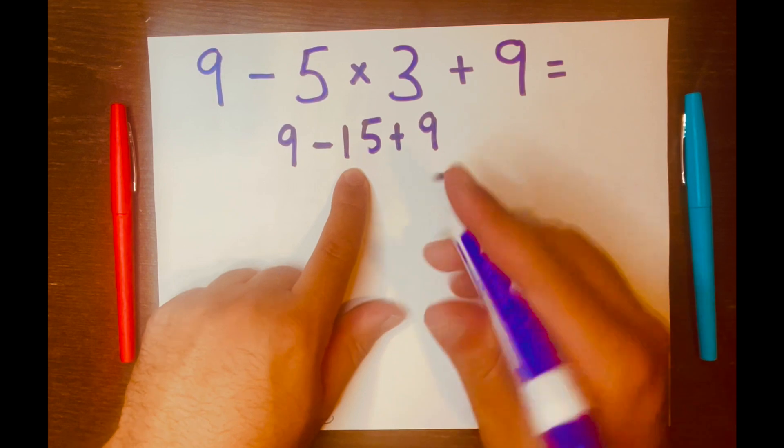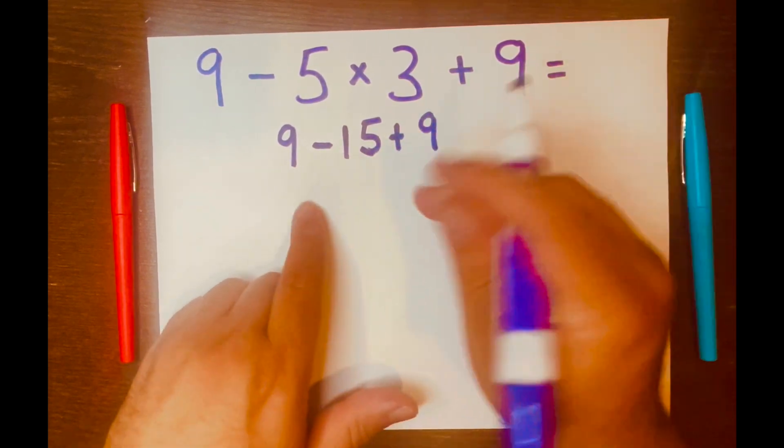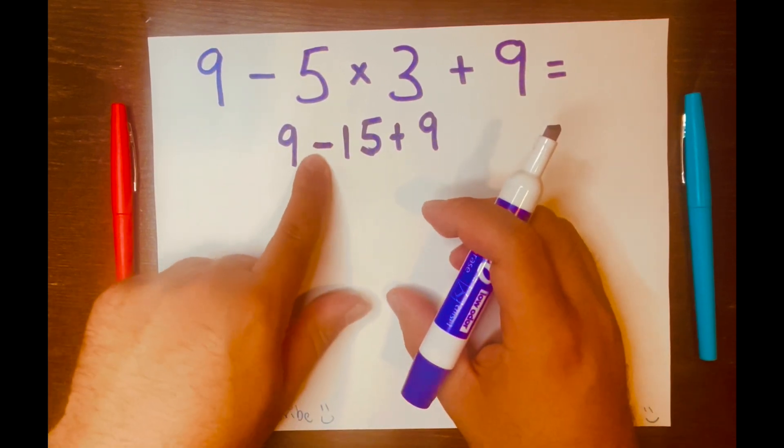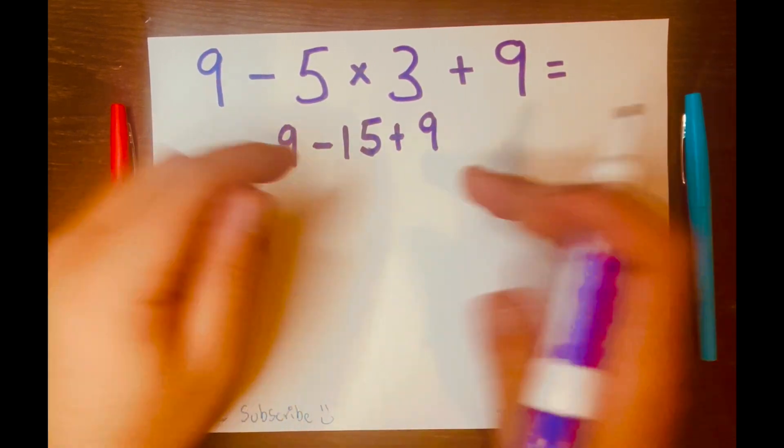Now we have nine minus 15 plus nine. Again, read from left to right. And subtraction and addition are in the same level.